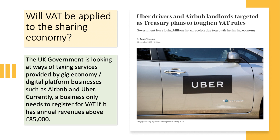One of the big issues going forward is where the government will get its revenue from. Should we tax income, wealth, spending, or a combination of all three? One question worth thinking about is whether VAT will be extended, especially with the UK government running a huge budget deficit needing fresh sources of revenue. The key sharing economy sectors in the UK include short-term accommodation like Airbnb, passenger transport such as Uber and Lyft, and on-demand household and professional services.